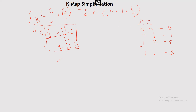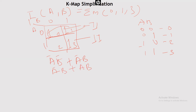Now let's group them. Group 1 contains the first pair: ĀB̄ + ĀB. Group 2 contains: ĀB + AB. Now we need to cancel terms that keep changing sign. In group 1, B keeps changing — so we cancel it. In group 2, A also keeps changing sign.